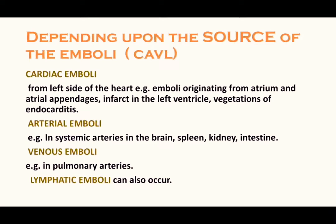Cardiac emboli originate from the left side of the heart — for example, from the atrium and atrial appendages, infarcts in the left ventricle, and vegetations of endocarditis. Arterial emboli occur in systemic arteries such as in the brain, spleen, kidney, and intestine. Venous emboli occur in the pulmonary arteries.